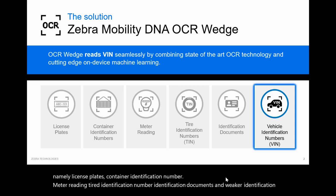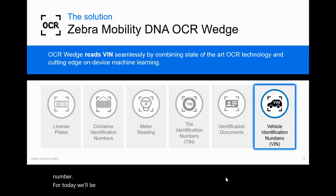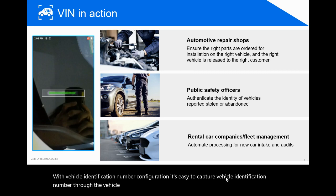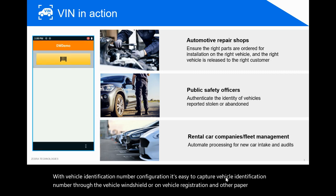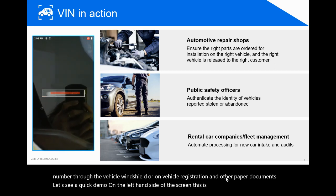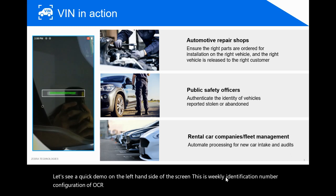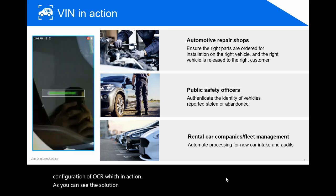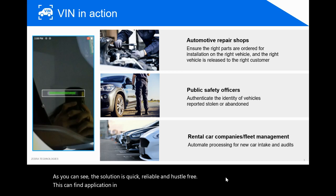Today we'll be discussing vehicle identification number. With the vehicle identification number configuration, it's easy to capture a vehicle identification number through the vehicle windshield or on vehicle registration and other paper documents. On the left-hand side of the screen, this is the vehicle identification number configuration of OCR Wedge in action. As you can see, the solution is quick, reliable, and hassle-free.